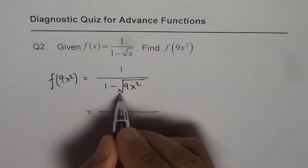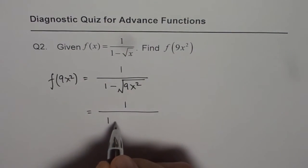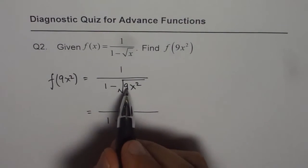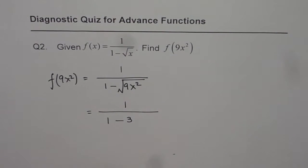Now what is square root of 9x squared? That is a big question. We know square root of 9 is 3, so 3 comes out. Now what is square root of x squared? That is the most important thing which you need to understand.